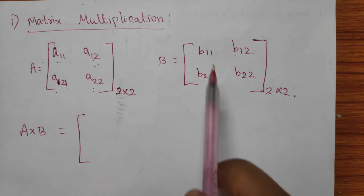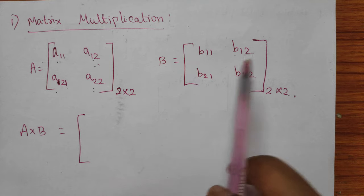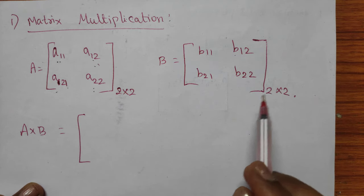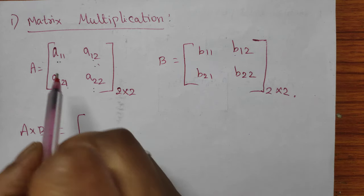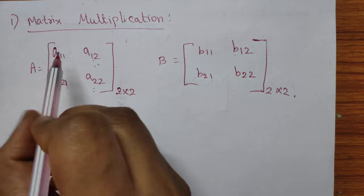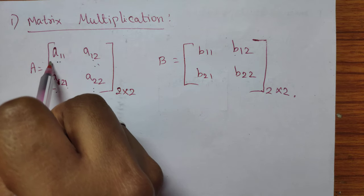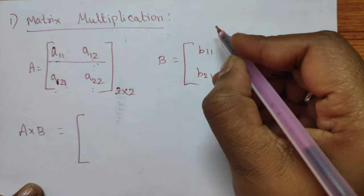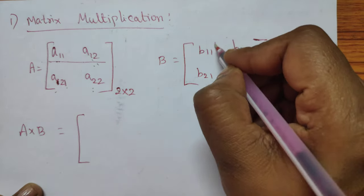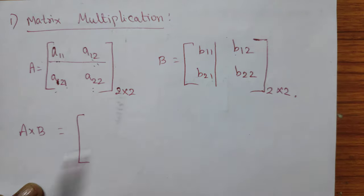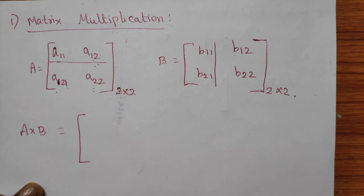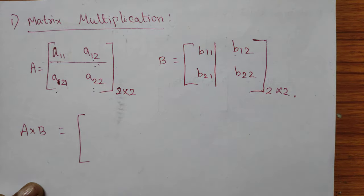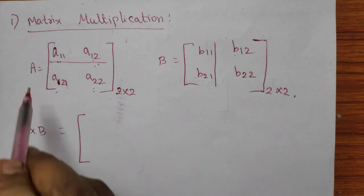Likewise we have elements in matrix B. How will we do multiplication between these two matrices? We have to take the first row of the first matrix and the first column of the second matrix.